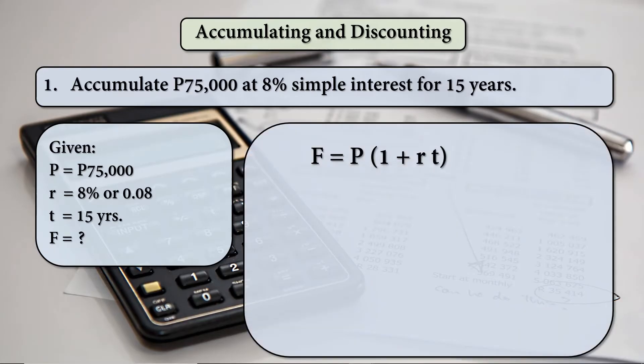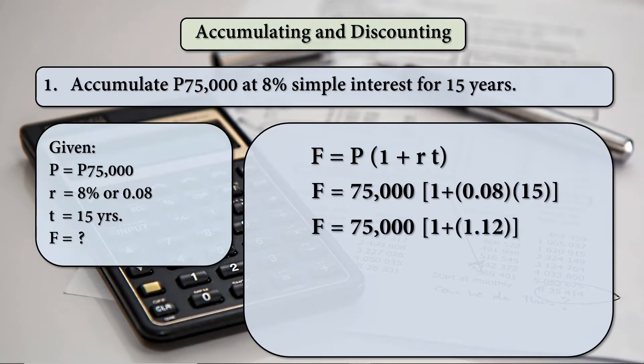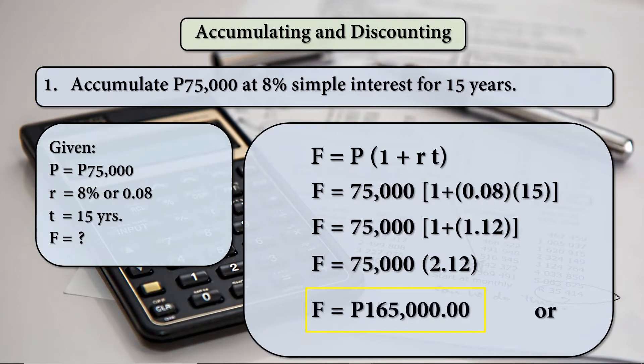Using the formula for the future amount on the simple interest formula, F equals P times 1 plus RT. Substituting the values: 75,000 times 1 plus 0.08 times 15. 0.08 times 15 is 1.12. 1 plus 1.12 equals 2.12. Then the resulting F or the amount is 165,000 pesos.